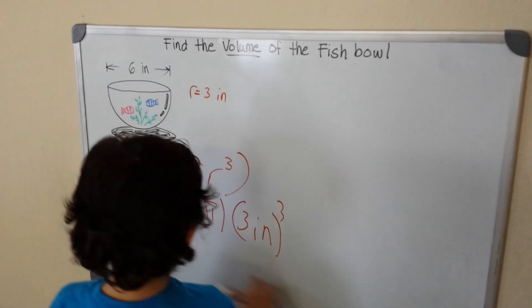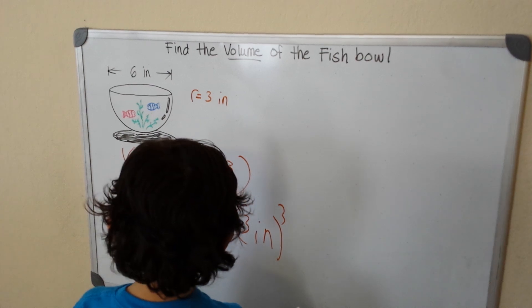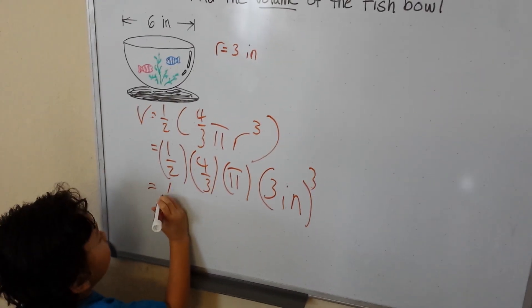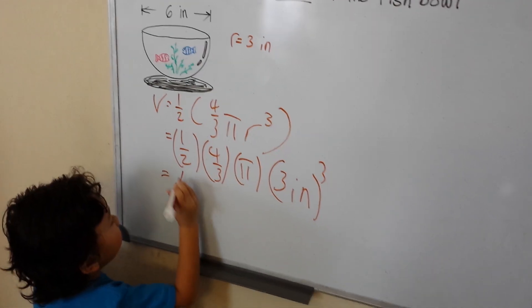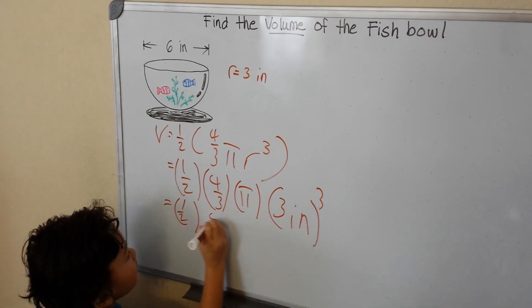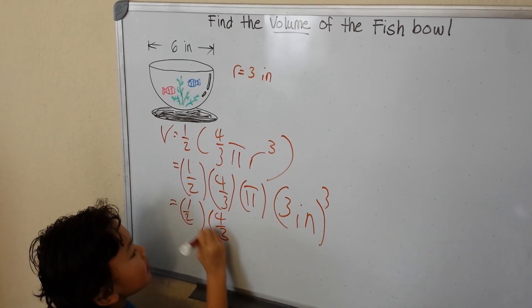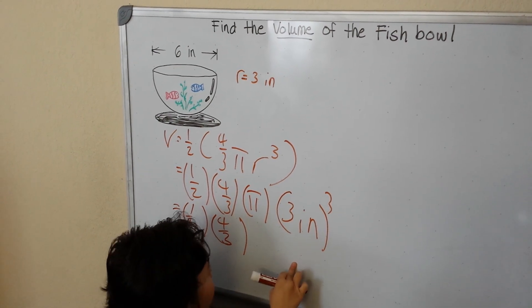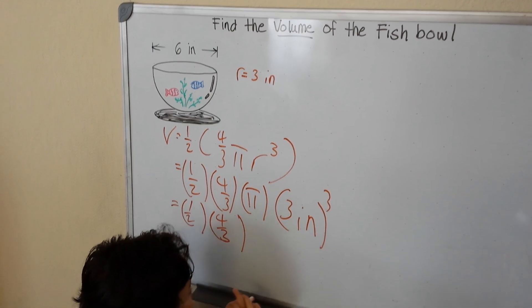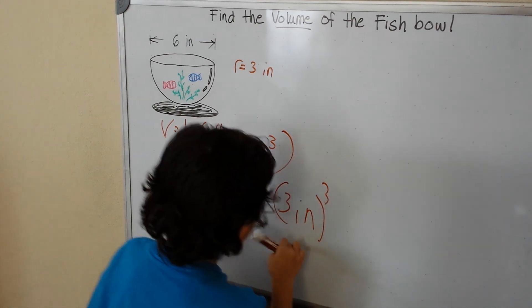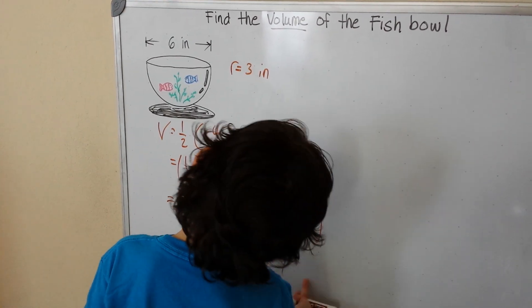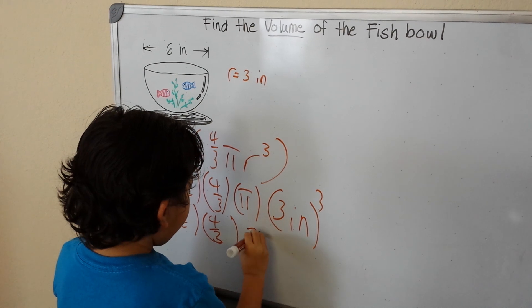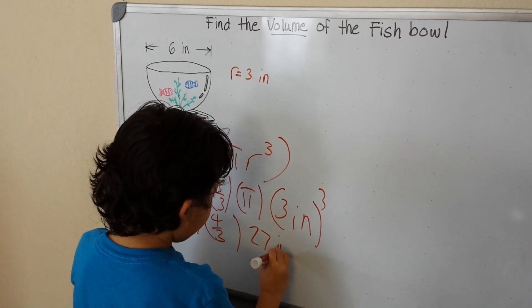Now let's move our pi to the end. So we get 1 half times 4 thirds times — we simplify the exponent. 3 times 3 is 9, times 3 is 27 inches cubed.